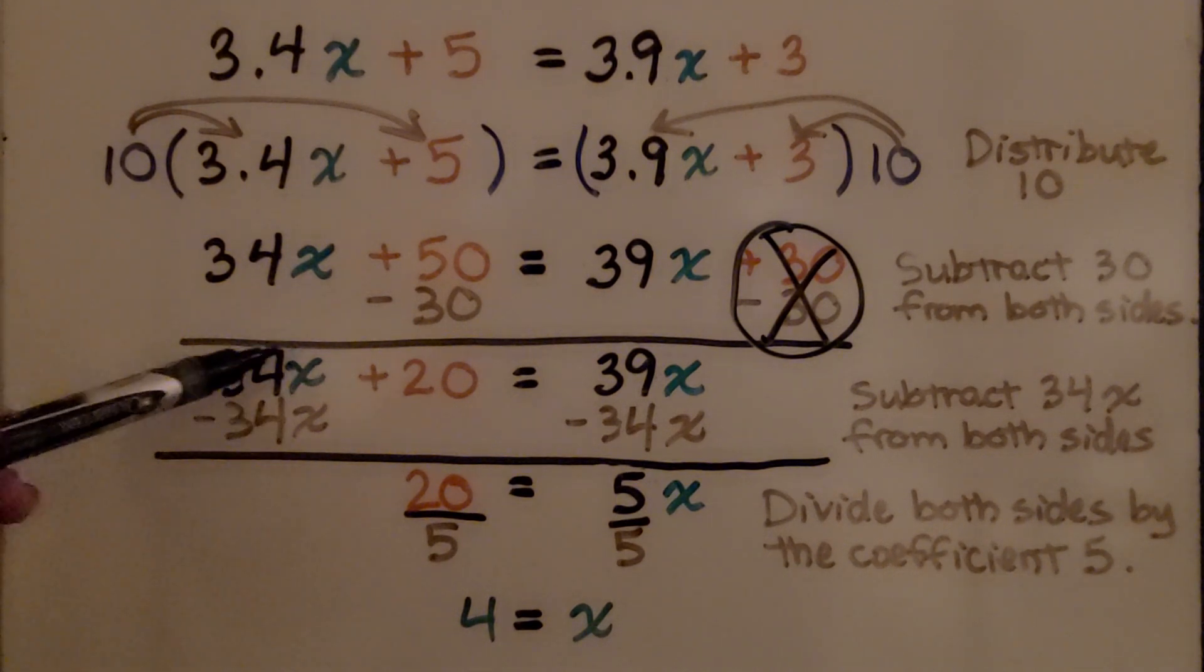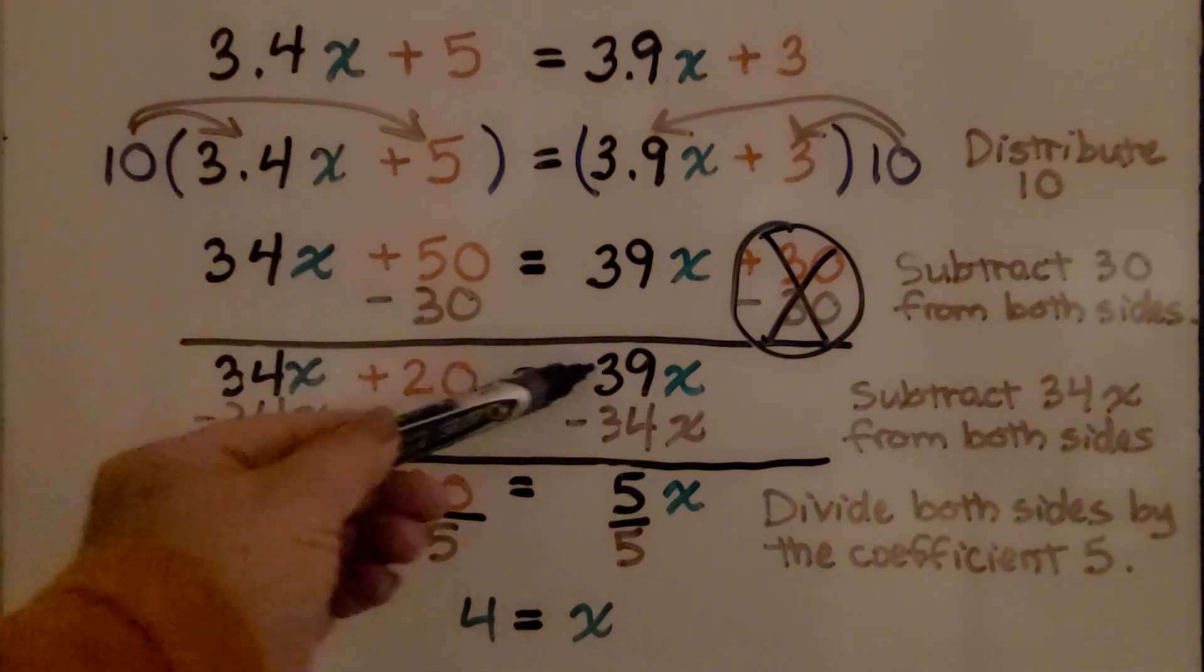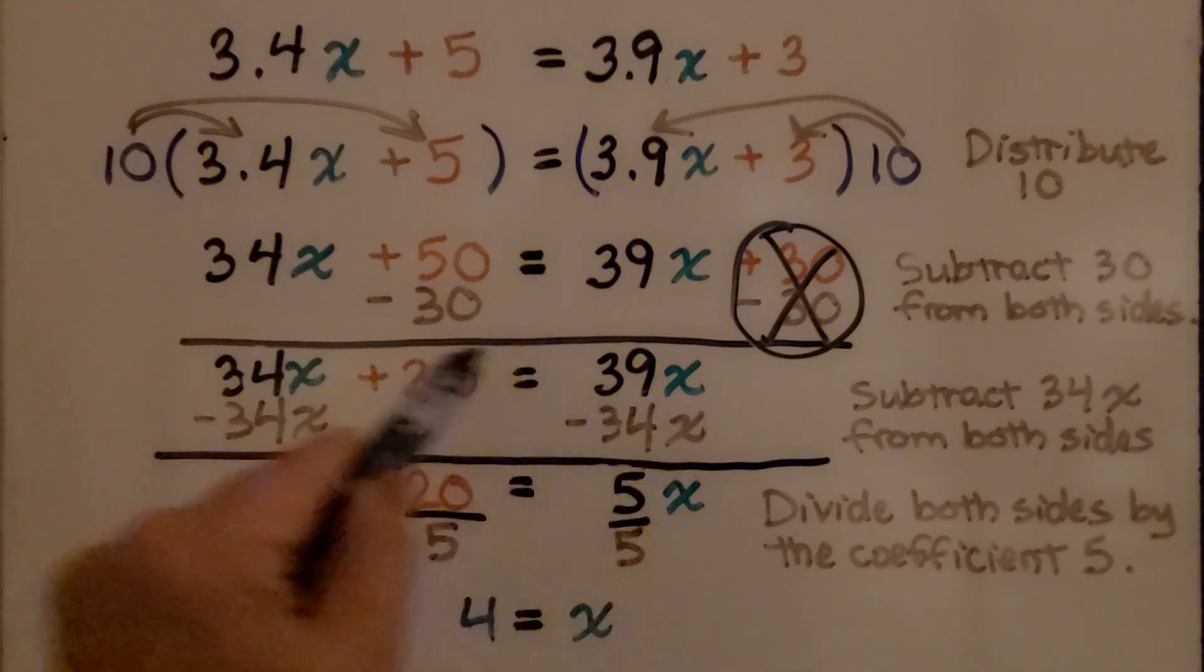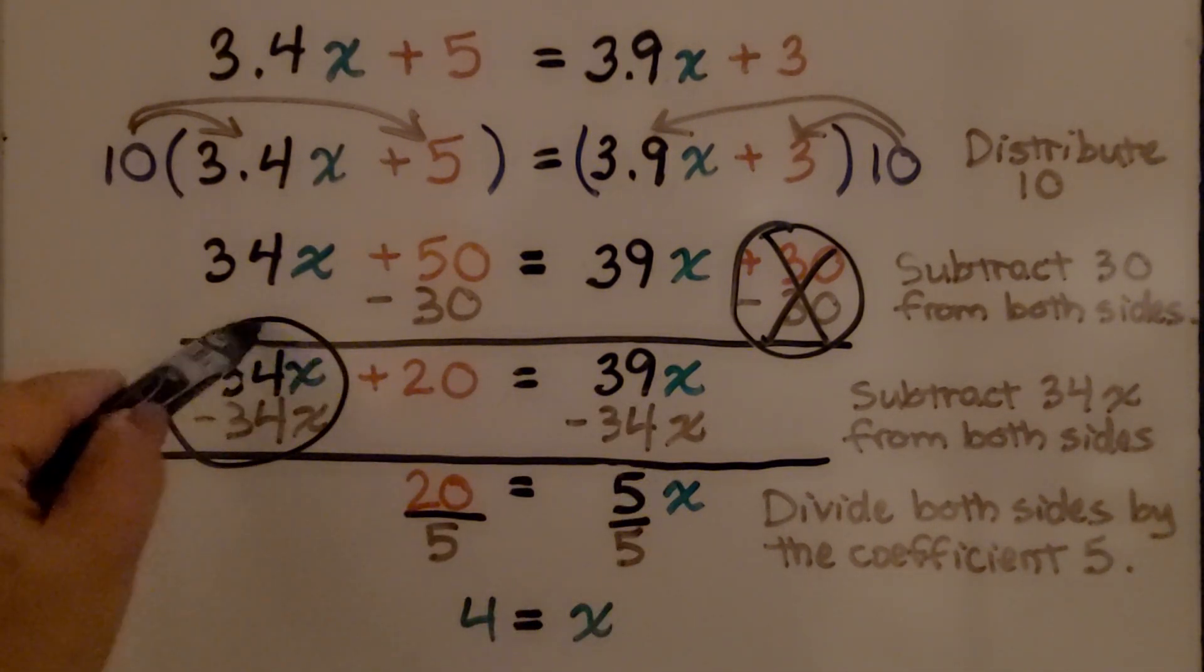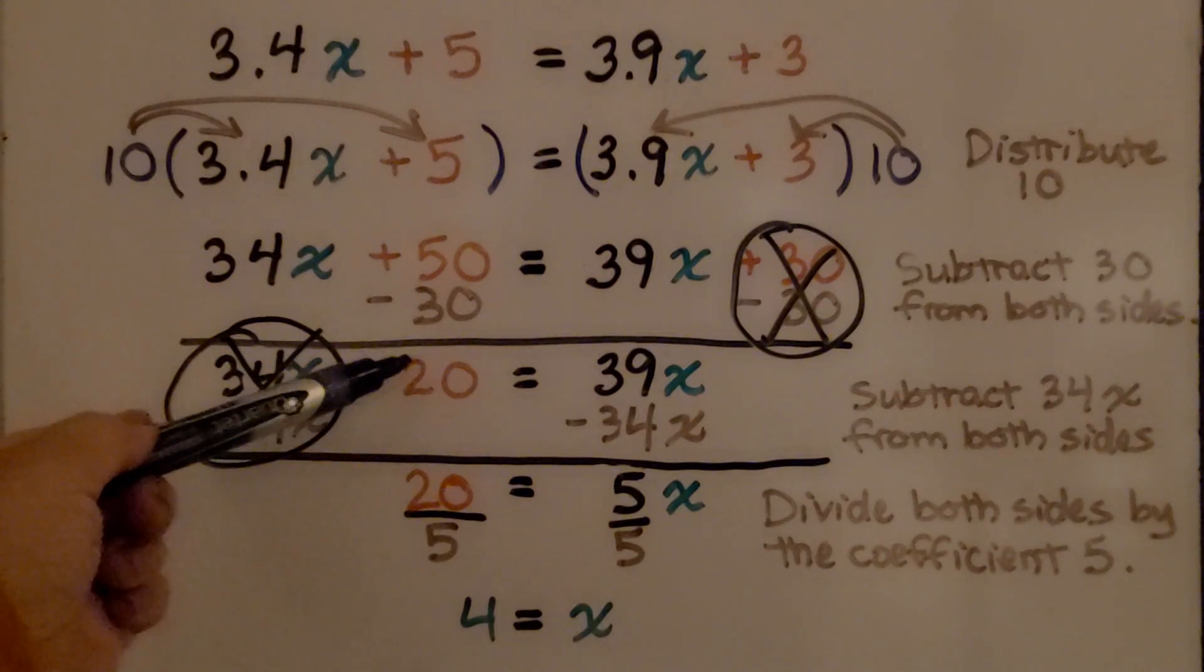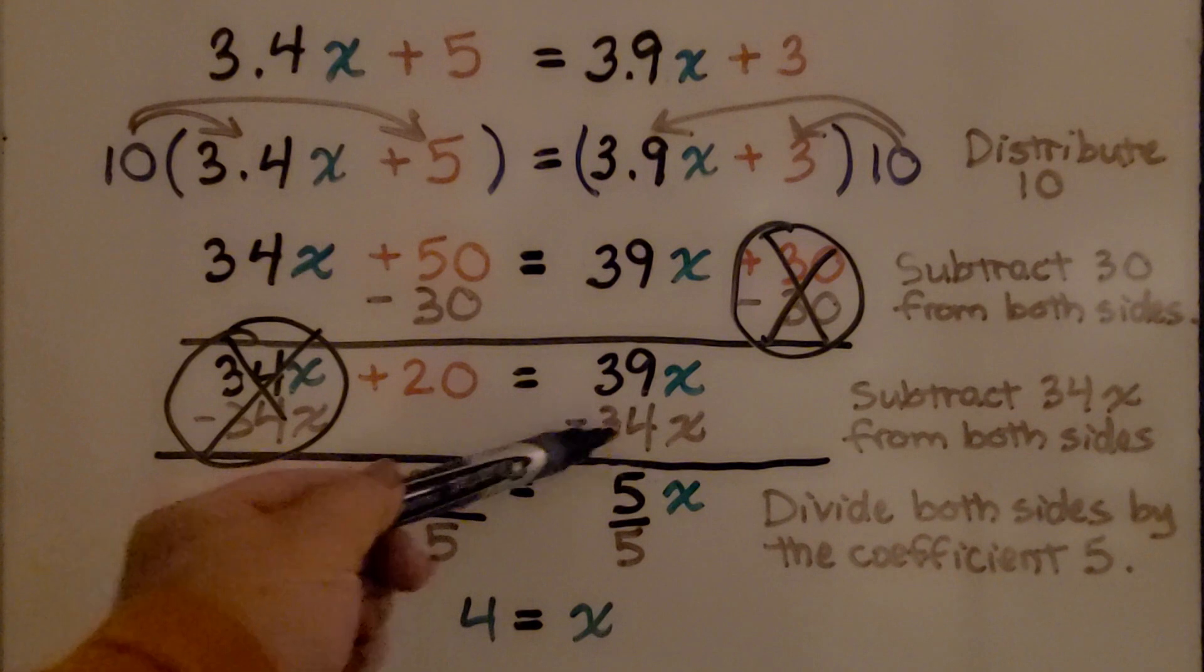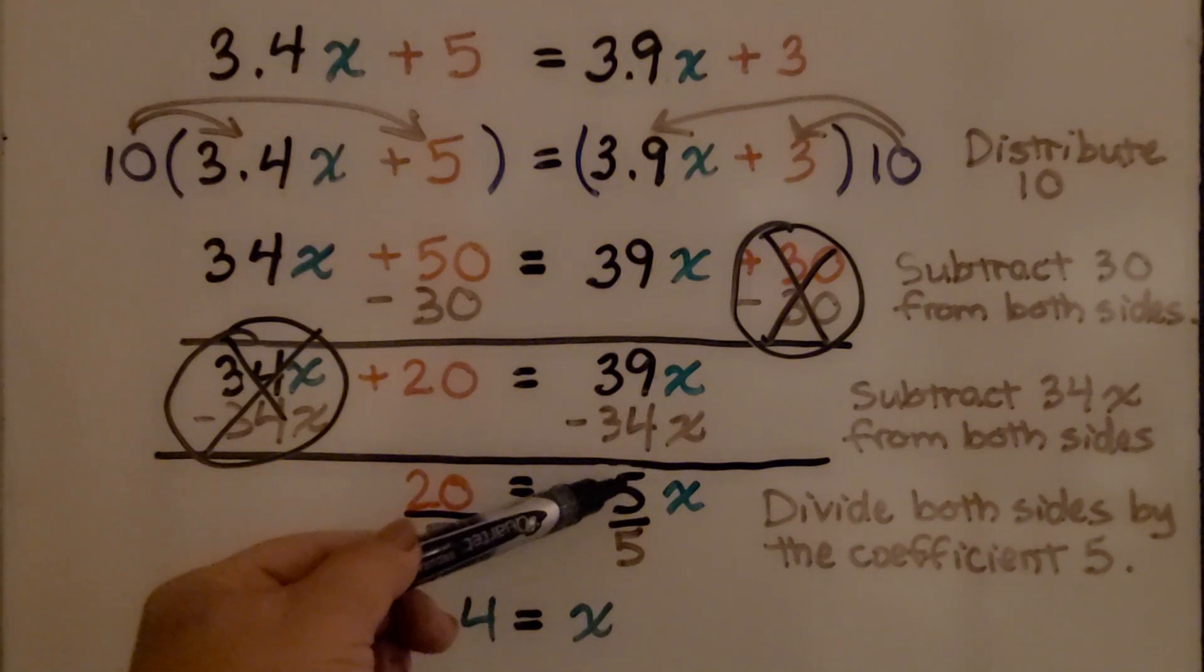And here we have 34x plus 20 equals 39x. Now we subtract the 34x from both sides. That's going to create a zero pair here and eliminate it. Now we're left with 20 equals 39x minus this 34x, which is 5x.